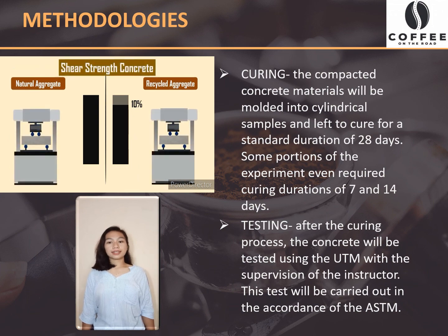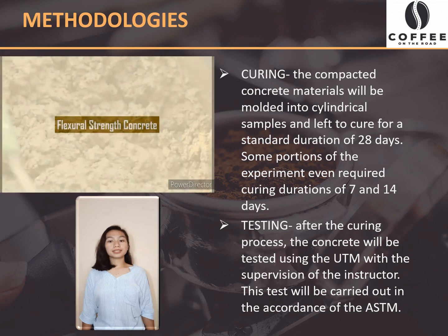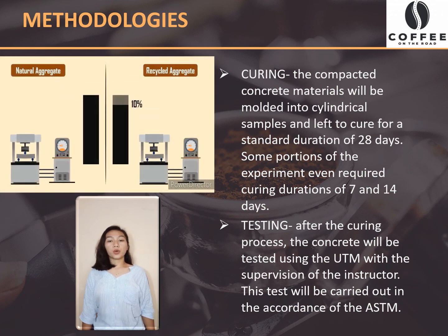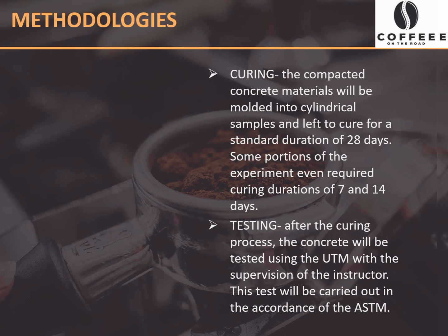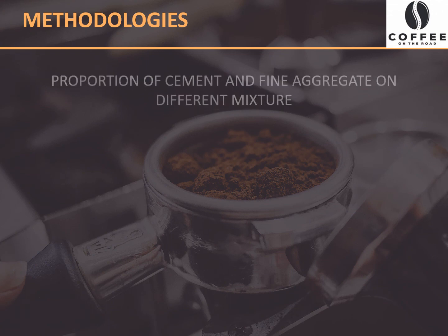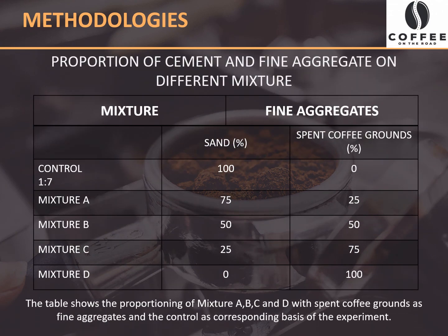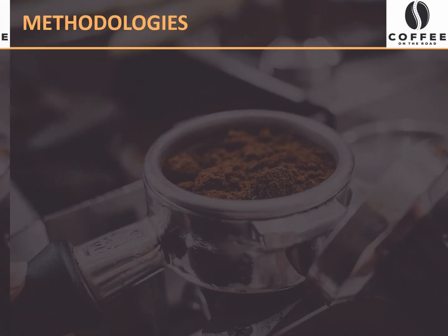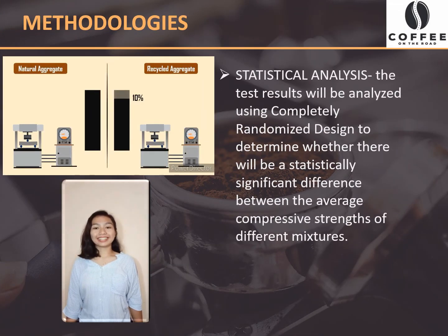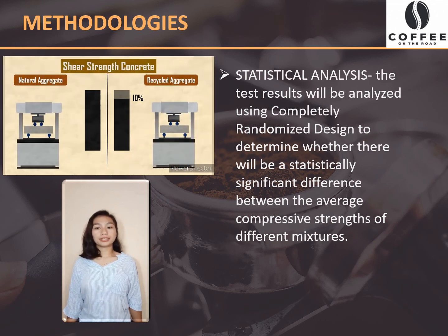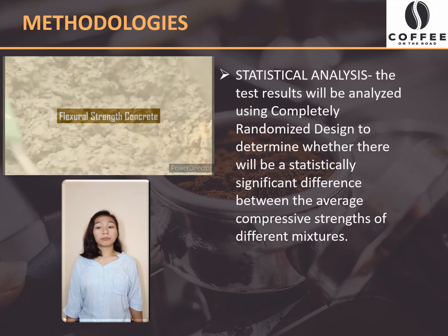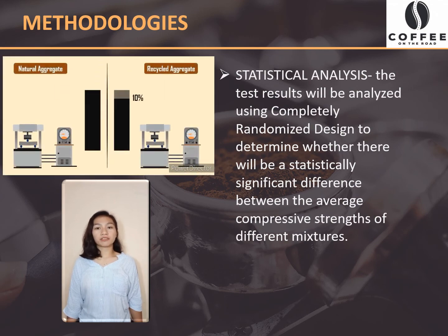Next is testing. After the curing process, the concrete will be tested using the universal testing machine with the supervision of the instructor. This test will be carried out in accordance with ASTM. The last step is statistical analysis. The test results will be analyzed using the completely randomized design to determine whether there will be a statistically significant difference between the average compressive strength of different mixtures.